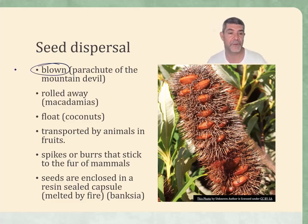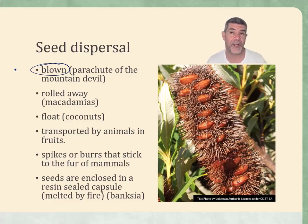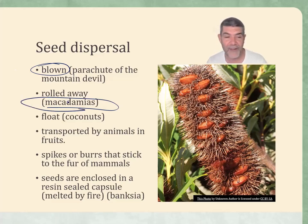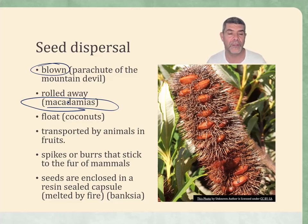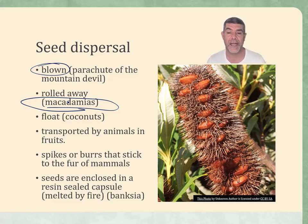One of the easiest seed dispersal strategies is wind dispersal. The parachute of the mountain devil is one way in which seeds can be dispersed — they can be very light and carried by the wind, dropping them perhaps kilometres away from where the parent individuals were. Seeds can also roll; macadamia nuts are round and will roll, moving them away from the plant. Remember, one of the things we don't want is parent individuals competing for the same resources — the same water, nutrients, soil nutrients, the same light — as their offspring.